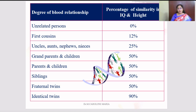You can observe the blood relationship between children and others in terms of resemblance in IQ and height. With unrelated persons, the similarity is 0%. With first cousins, 12%. With uncles, aunts, nephews, and nieces, 25%. With grandparents, parents, or siblings, 50%. With fraternal twins, also 50%. But identical twins resemble each other 90% in both height and IQ — they would be exactly alike.